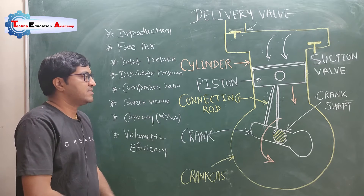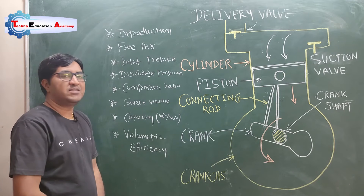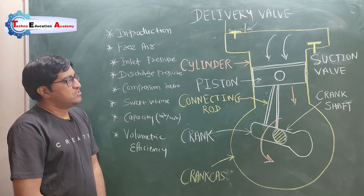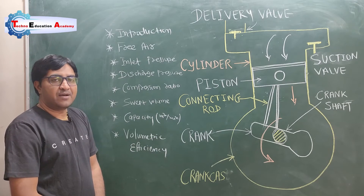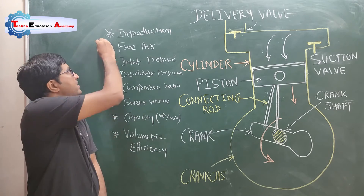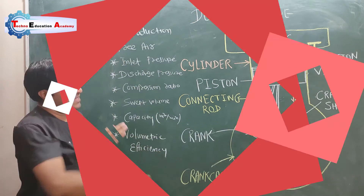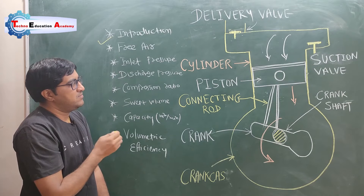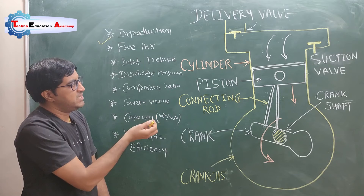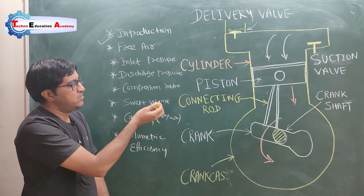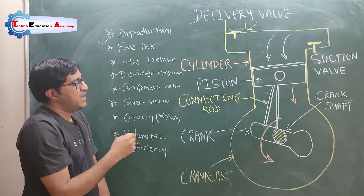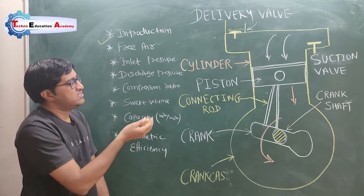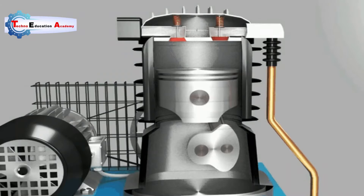First of all, what is the definition of air compressor? An air compressor is a device or machine which takes the air at low pressure and delivers the air at high pressure by using some kind of mechanism.